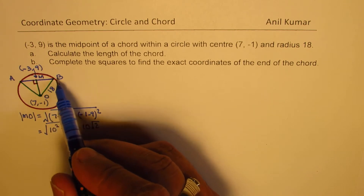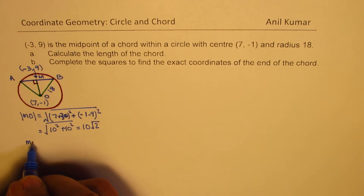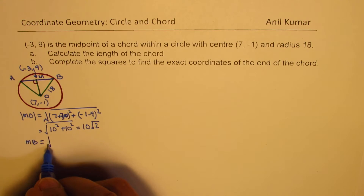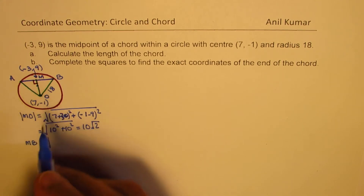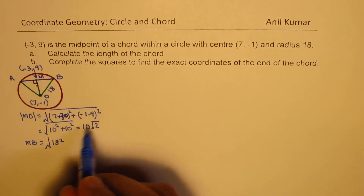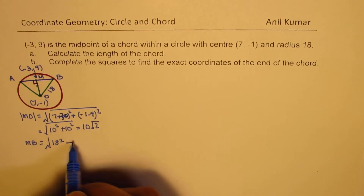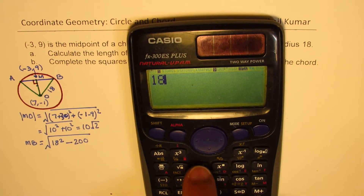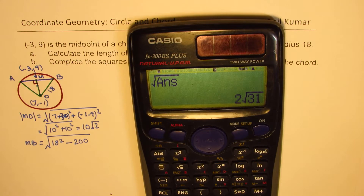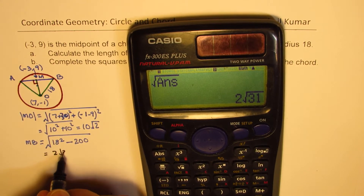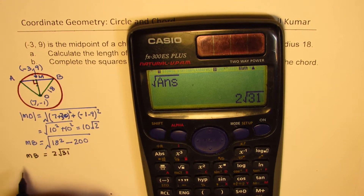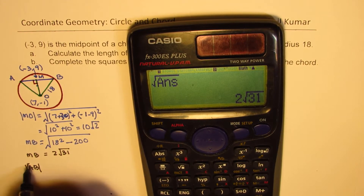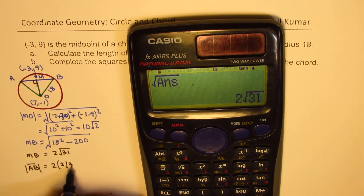OB, the radius, is already given as 18. So MB equals the square root of 18 squared minus OM squared. OM squared is (10 root 2) squared which equals 200. So we have the square root of 18 squared minus 200, which equals 2 root 31. This is half of the chord length. So AB, the full chord length, equals 2 times 2 root 31, which gives us 4 root 31 units.